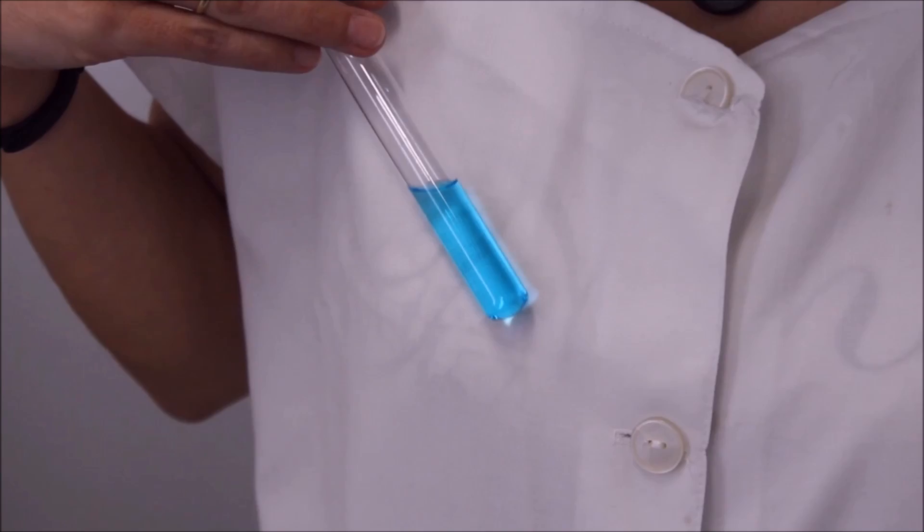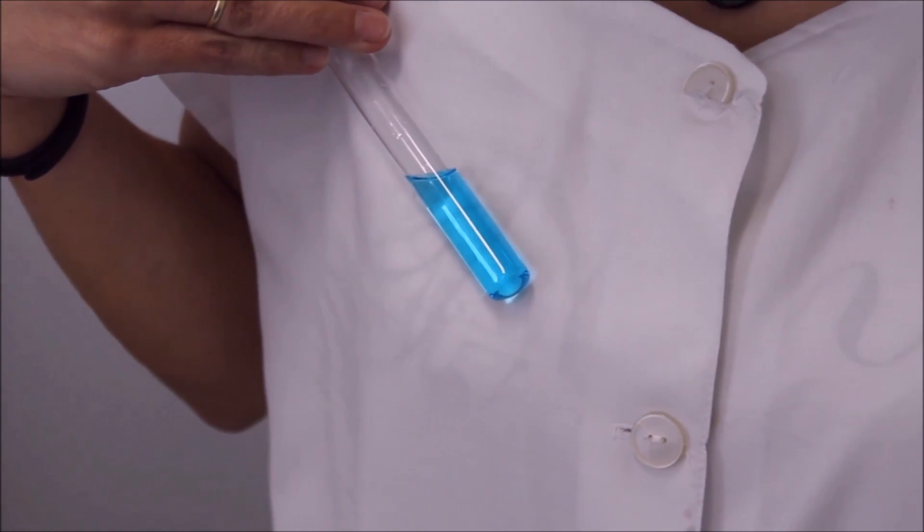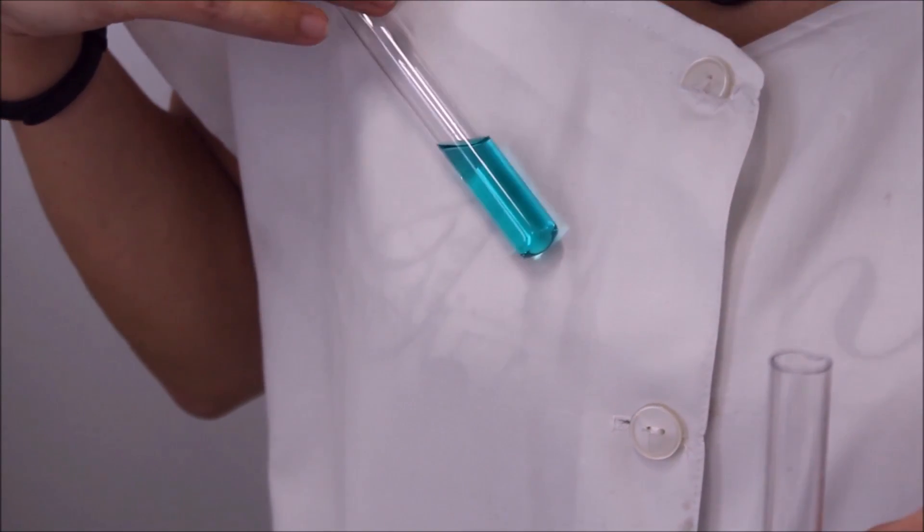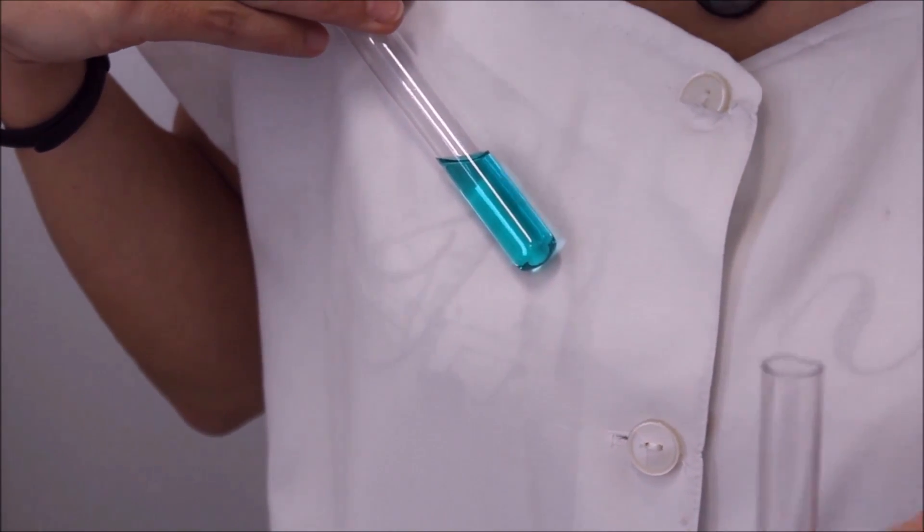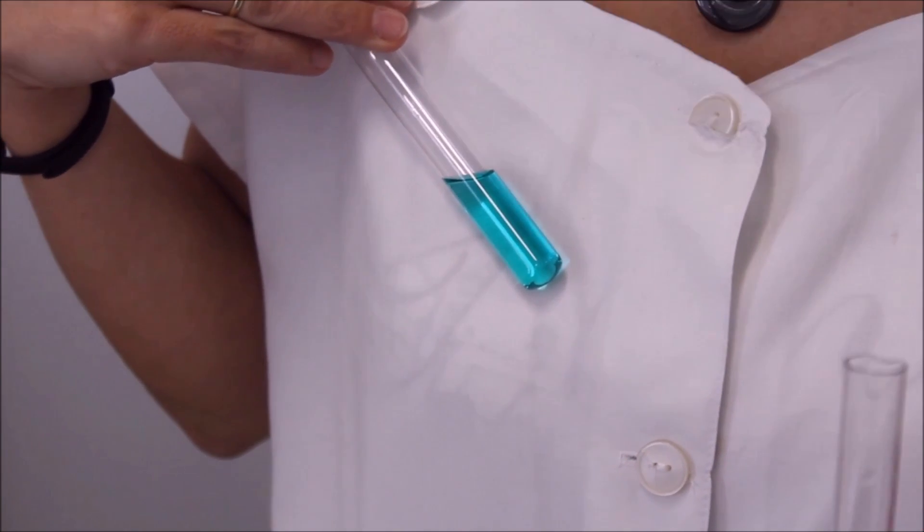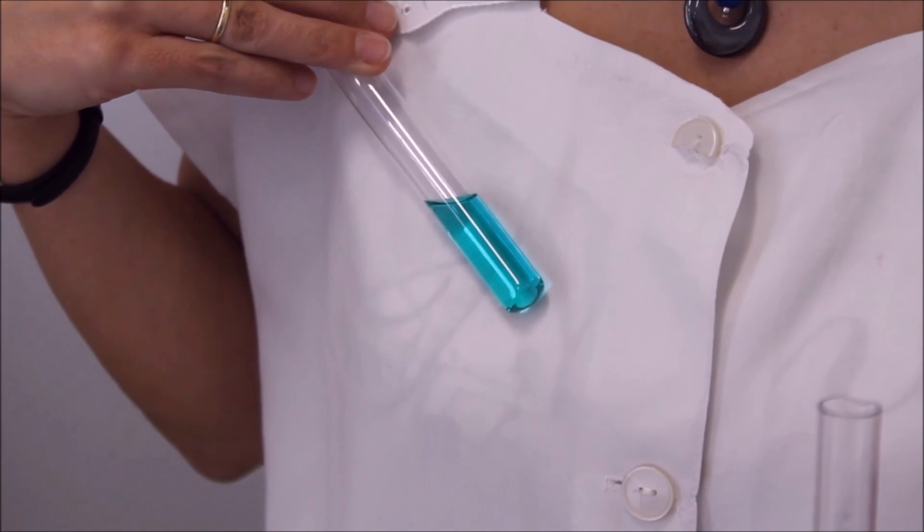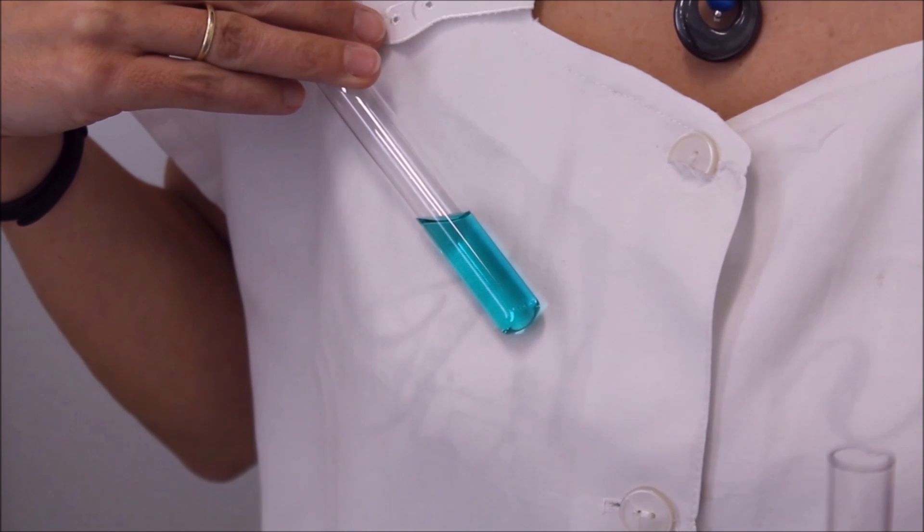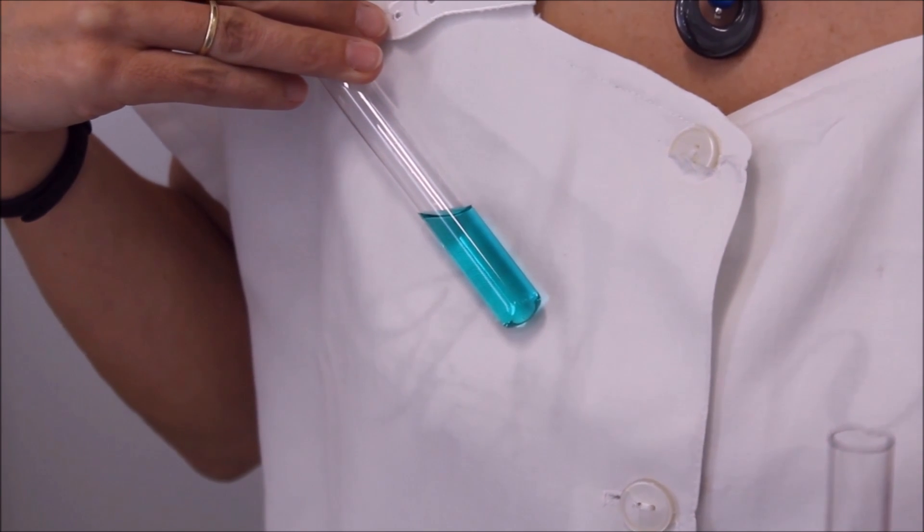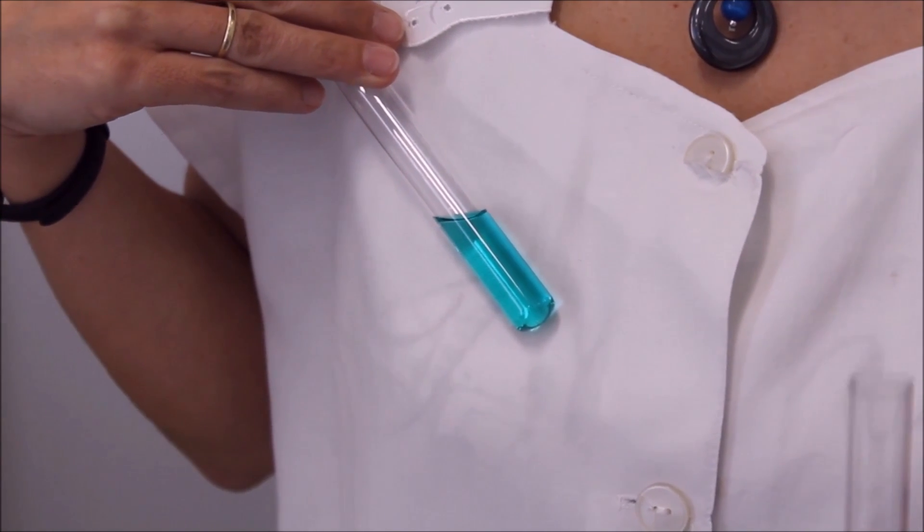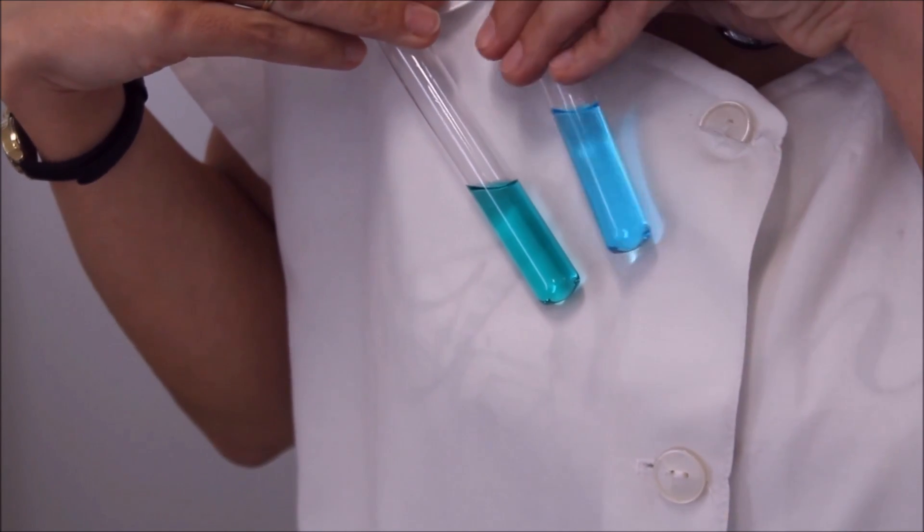A részszulfát oldat gyönyörű kék színű. A káliumbromid hatására az oldatban már rész tetrabromid komplexionok is vannak, amelyek zöld színűek, de az egyensúlyi elegyben a kék színű részszulfátionok és a komplexionok egyszerre vannak jelen, ezért ilyen kéke-zöld színű az oldat.